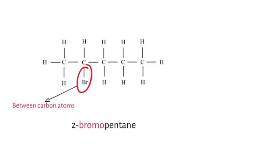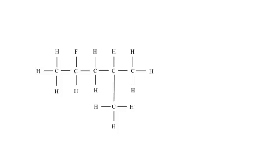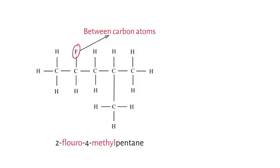Here's another example of a secondary haloalkane. We have F between two carbon atoms and not on the first carbon, which means it's a secondary haloalkane. The IUPAC name will be 2-fluoro-4-methylpentane.